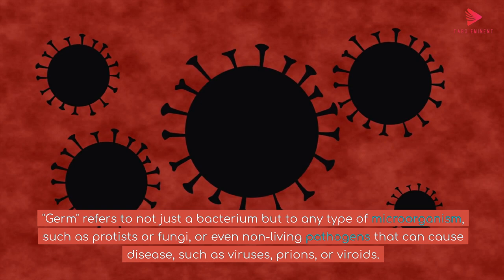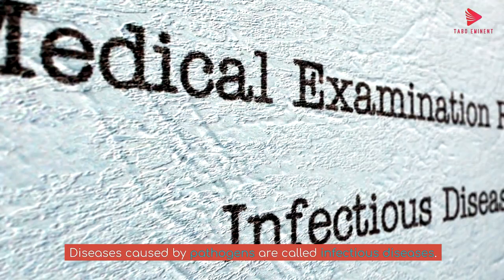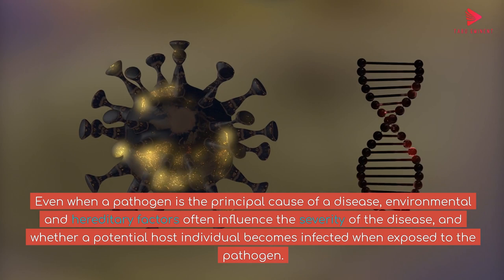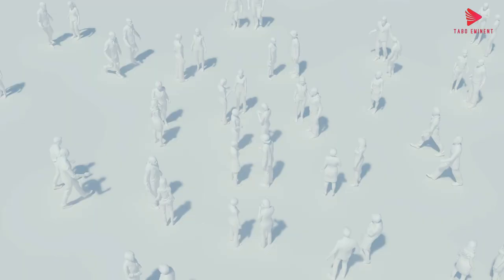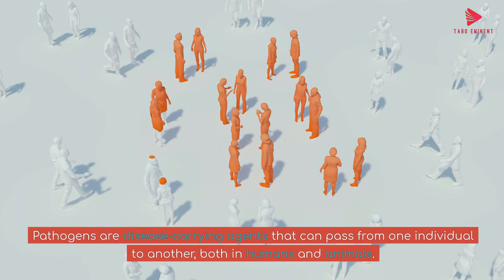Diseases caused by pathogens are called infectious diseases. Even when a pathogen is the principal cause of a disease, environmental and hereditary factors often influence the severity of the disease and whether a potential host individual becomes infected when exposed to the pathogen. Pathogens are disease-carrying agents that can pass from one individual to another, both in humans and animals. Infectious diseases are caused by biological agents such as pathogenic microorganisms, viruses, bacteria, and fungi, as well as parasites.